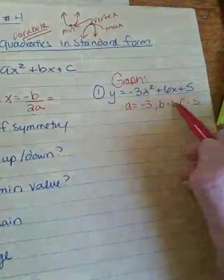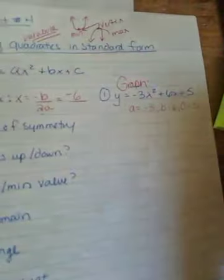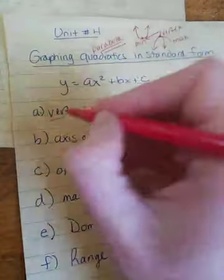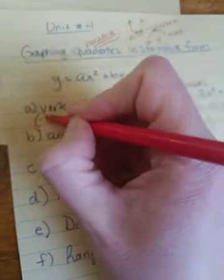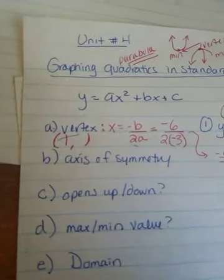So, I'm going to take those values and put them into this negative b over 2a. So, since b is 6, negative b is negative 6, divided by 2 times my negative 3. Oh, shoot. Sorry. I did not leave myself much room. So, this is negative 6 over negative 6, which is 1. Now, what you just found, notice I wrote x equals, you just found the x value of the vertex. That's important.